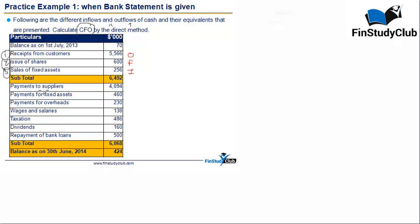In terms of payments: payment to supplier — operational; payment for fixed assets — investment; payment for overheads — operational; wages and salaries — operational; taxation — operational, assuming I am unable to make any connection with any other kind of income, so the entire taxes go to operating activity; dividend paid — financial; and bank loan repayments — also financial. This is really the direct method in its pure form, where you are given a bank statement with different cash flows and all you need to do is categorize and select the CFO.